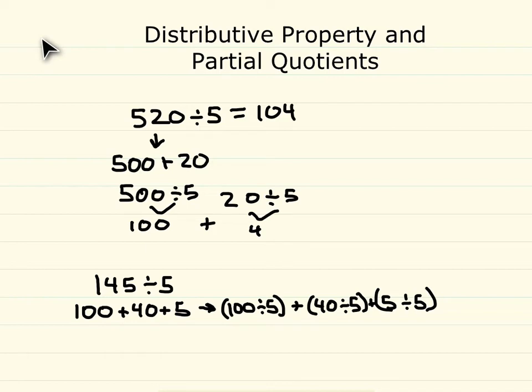So first off, what is 100 divided by 5? Well, that's 20. 40 divided by 5 is 8, and 5 divided by 5 is 1. Add these together and we get our quotient of 29.